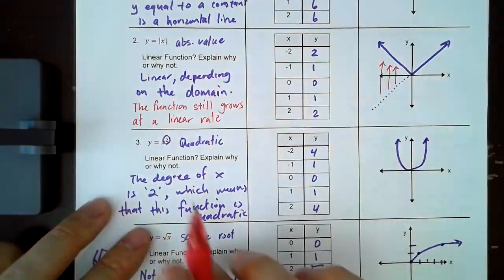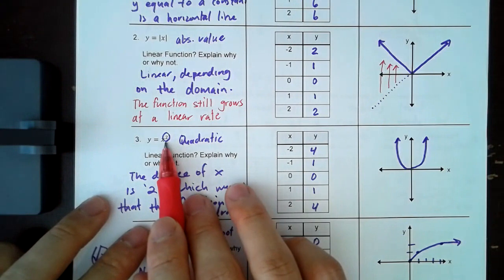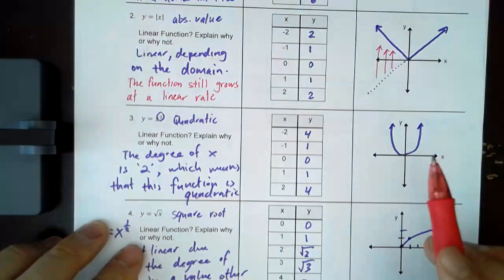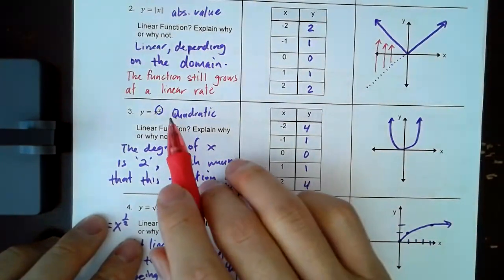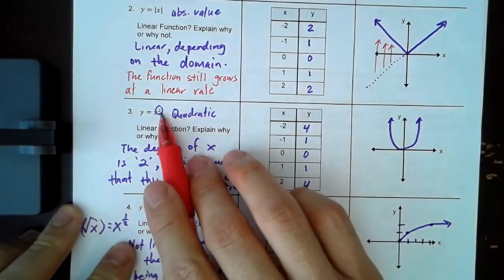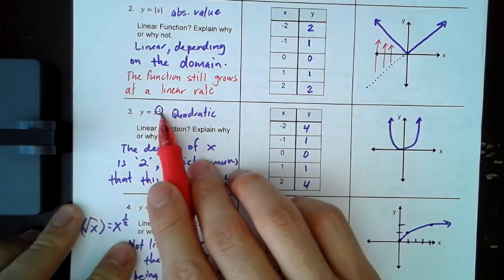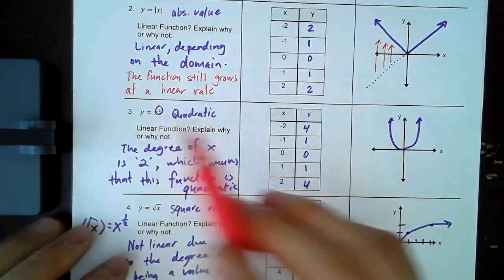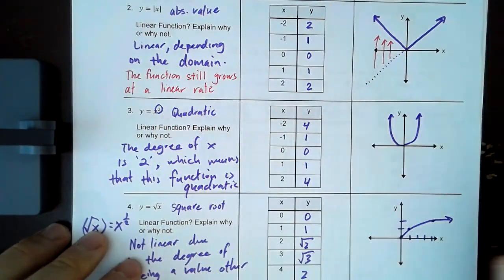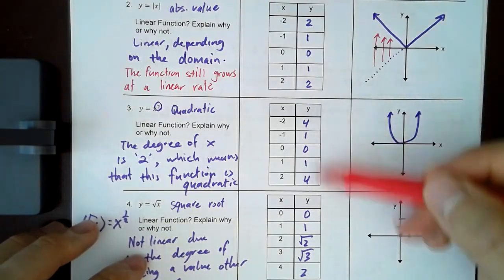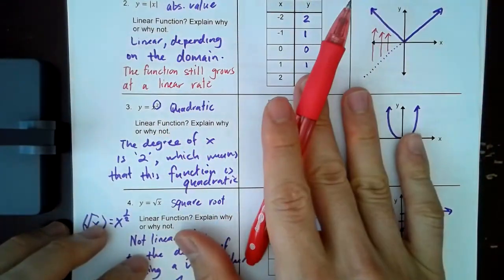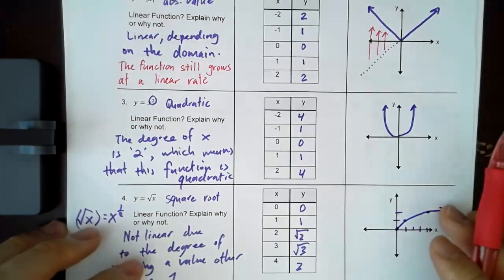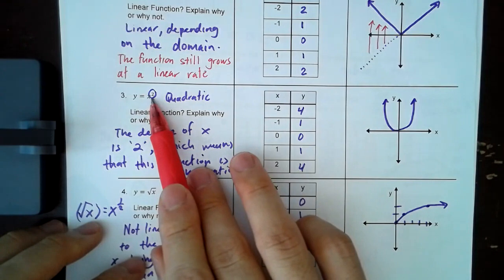For number three, the thing I want you to realize, and the thing I want all of us to get used to comparing is the degree of x, right? The highest degree. The highest degree of x will dictate the overall shape of the graph. So the fact that we have an x squared, that tells you that this is going to be quadratic. You can plug in values all you want. You don't even need to plug in into a table of values. You already know that just by looking at the equation, the function has to be quadratic, because the degree of x is two.